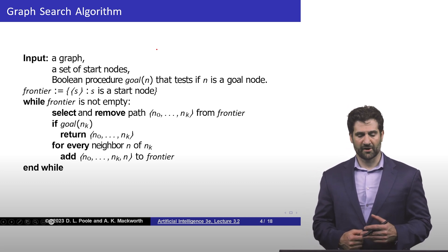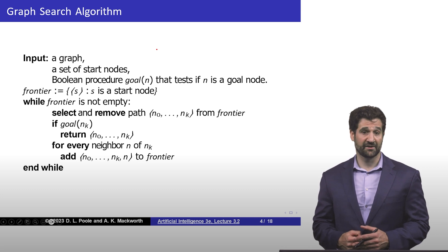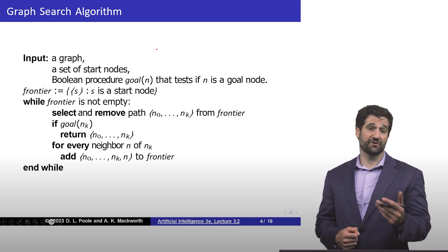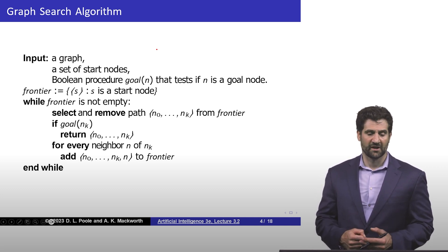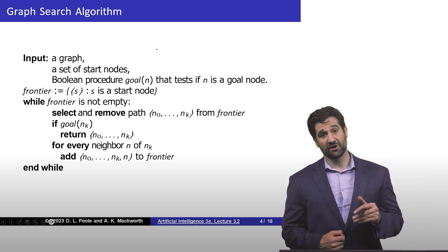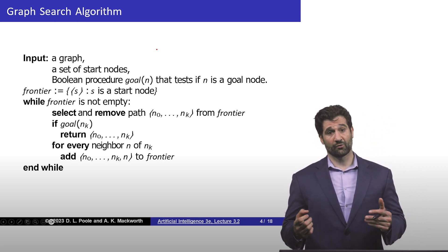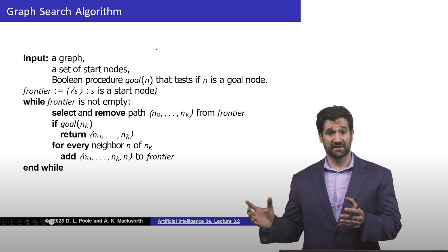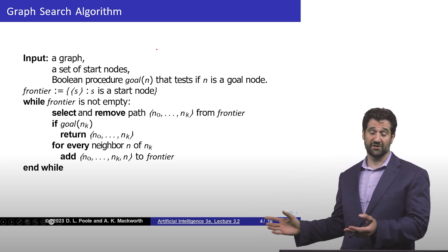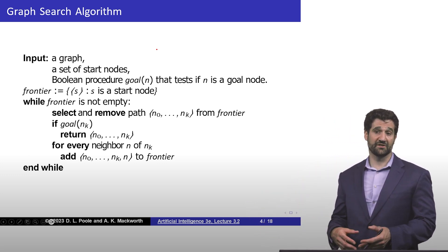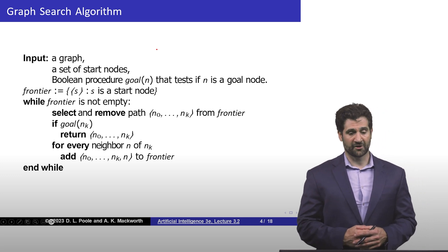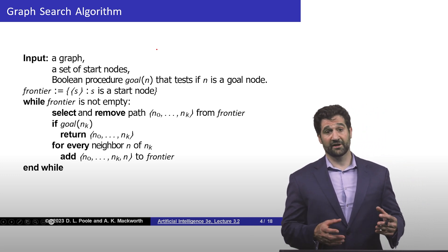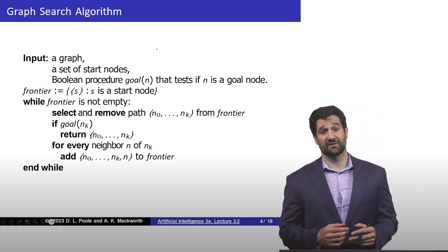Otherwise, for every neighbor of that last node in the path, we're going to add that neighbor to the frontier. How we pick which node of the frontier that we're going to look at next dictates the search strategy. Complexity and completeness will vary greatly just based on how we make this simple decision.